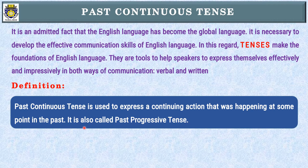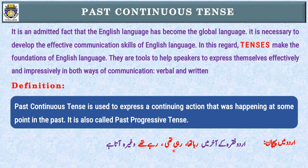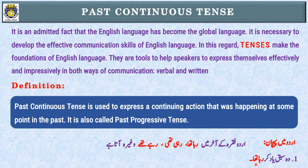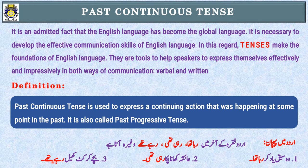Past Continuous Tense is also called Past Progressive Tense. اب دیکھتے ہیں اردو میں اس کی پہچان کیا ہوتی ہے۔ اردو فقرے کے آخر میں 'رہا تھا'، 'رہی تھی'، یا 'رہے تھے' وغیرہ آتا ہے۔ مثال کے طور پر: وہ سبق یاد کر رہا تھا — آخر میں 'رہا تھا' آیا، جو Past Continuous Tense کی پہچان ہے۔ عائشہ کھانا پکا رہی تھی — 'رہی تھی' سے پتہ چلا کہ یہ Past Continuous Tense ہے۔ بچے کرکٹ کھیل رہے تھے — 'رہے تھے' determine کرتا ہے کہ یہ Past Continuous Tense ہے۔